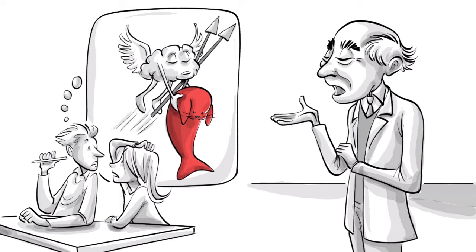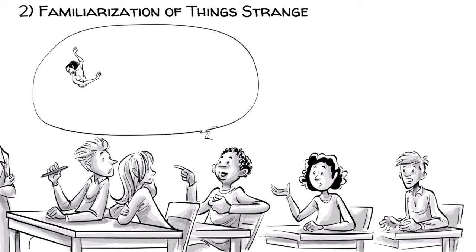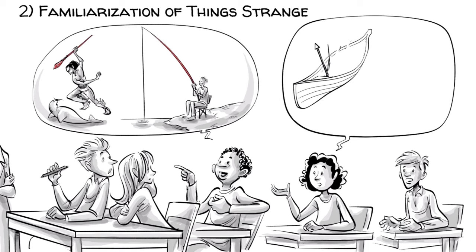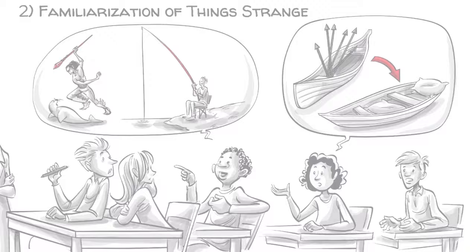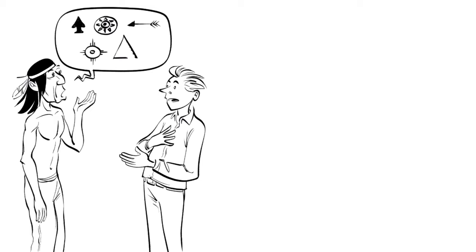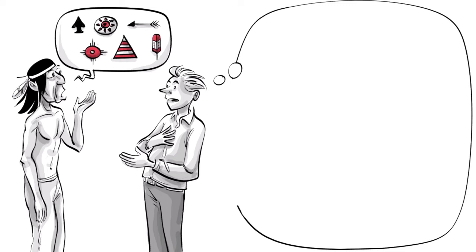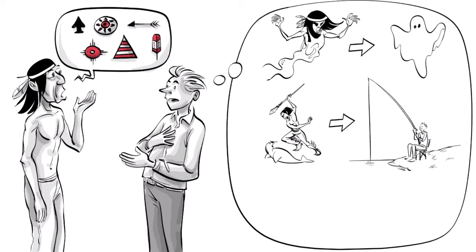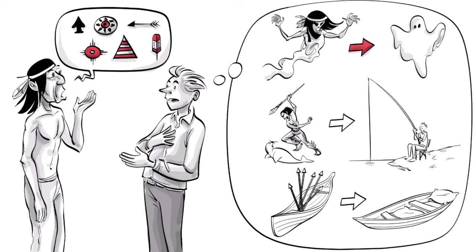2. Familiarization of things strange. Some of the students that initially did remember the part about hunting seals later recalled the activity as going fishing. A canoe that was loaded with weapons was remembered as a rowboat. This happens because when we lack the words to describe new unique experiences, we use idioms or figures of speech. In other words, we channel unfamiliar information through the framework of a familiar schema. And because we do that every time we recall that unique experience, over time it becomes more familiar and less authentic.